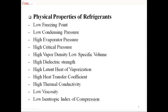Refrigerant should have a low value of condenser pressure, so that power required for compression will be lower, resulting in low operating cost. Refrigerant should have a high value of operating pressure; otherwise atmospheric air or moisture will leak into the system. Refrigerant should have a high value of critical pressure; otherwise the zone of condensation decreases. Refrigerant should have a high value of vapor density or low specific volume, so it will require a smaller compressor and condenser tubes of smaller diameter.